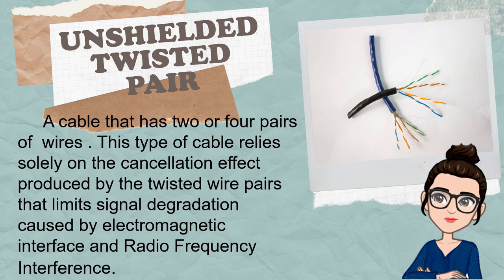Unshielded Twisted Pair is a cable that has two or four pairs of wires. This type of cable relies solely on the cancellation effect produced by the twisted wire pairs that limit signal degradation caused by electromagnetic interference and radio frequency interference.